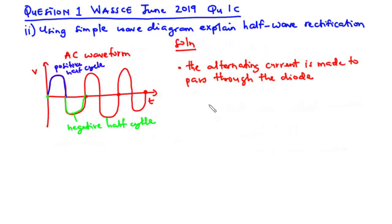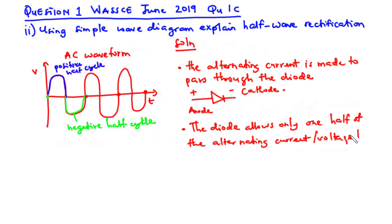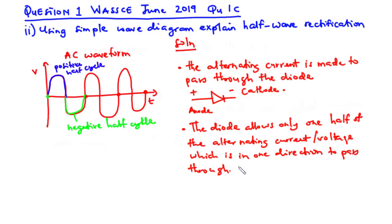For those who don't know how a diode looks like, this is the symbol for a diode. We have the negative side which is called the cathode and the positive side which is the anode. The diode allows only one half of the alternating current or voltage which is in one direction to pass through. The diode allows the positive half cycle to pass through and blocks or clips off the negative half cycle.